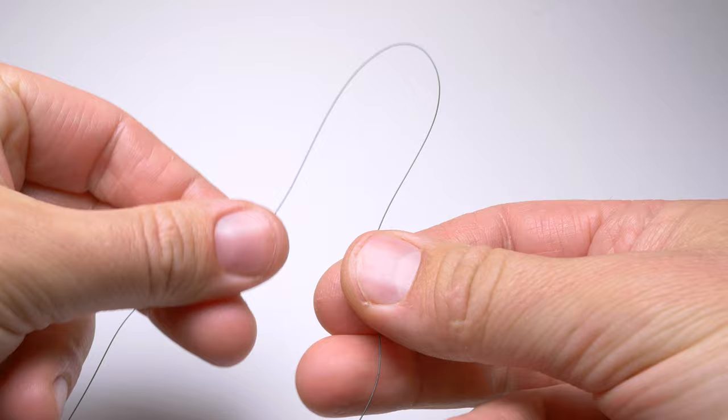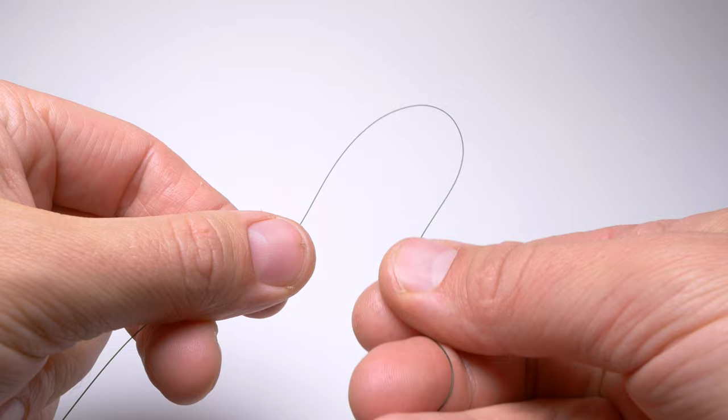Then I will form a twizzled loop by holding the line with my fingers and twisting the line in the opposite directions.